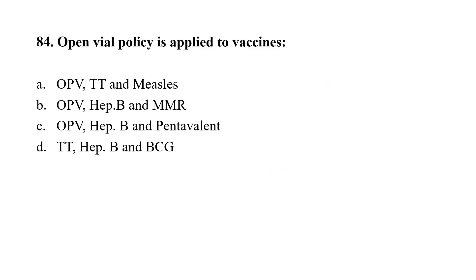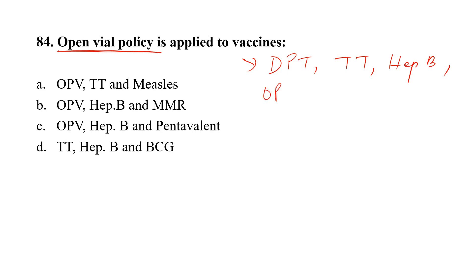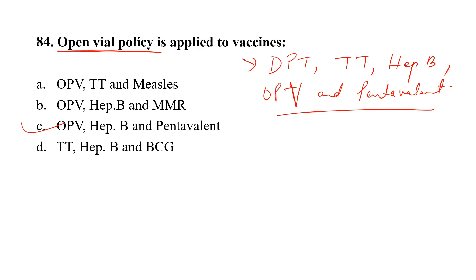Question number 84. Open vial policy is applied to which vaccines? Option A, OPV, TT, and measles; Option B, OPV, hepatitis B, and MMR; Option C, OPV, hepatitis B, and pentavalent; Option D, TT, hepatitis B, and BCG. The open vial policy is applied to DPT, hepatitis B, OPV, and liquid pentavalent. The correct option is C — OPV, hepatitis B, and pentavalent.